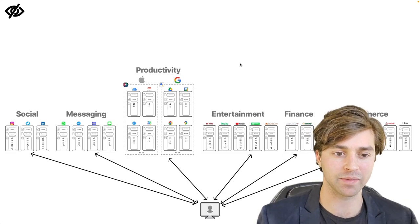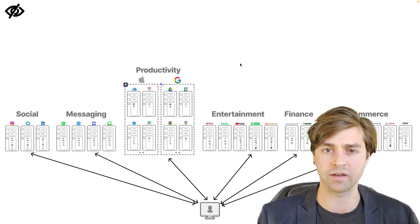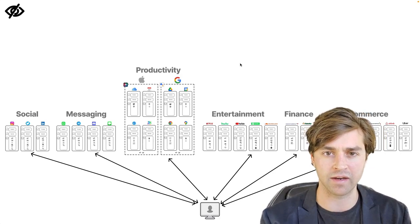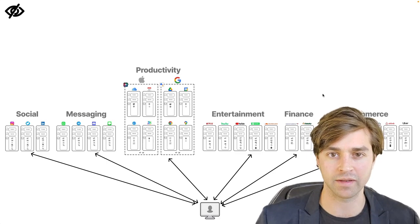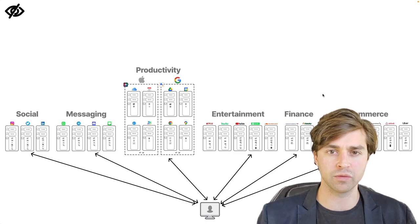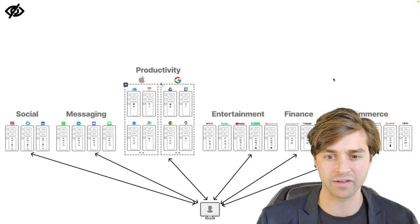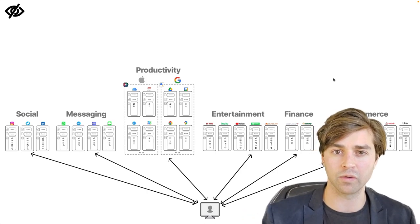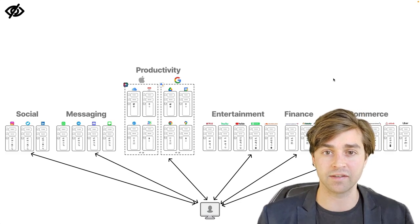The same goes for entertainment applications. I watch movies and TV shows on Netflix and Hulu, videos on YouTube, and listen to music on Spotify and SoundCloud. But my viewing history and preferences are spread across these platforms, so each platform only recommends content based on my preferences within that narrow platform. Finance is another example — I have two checking accounts across two different banking providers, so I'm not able to see a master view of my net worth. And e-commerce has similar issues: Amazon, Etsy, Todd Snyder all have different purchase histories and I have to go into each application to see my order history and pending orders.